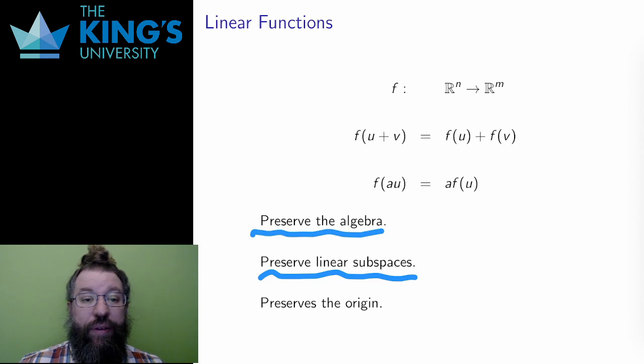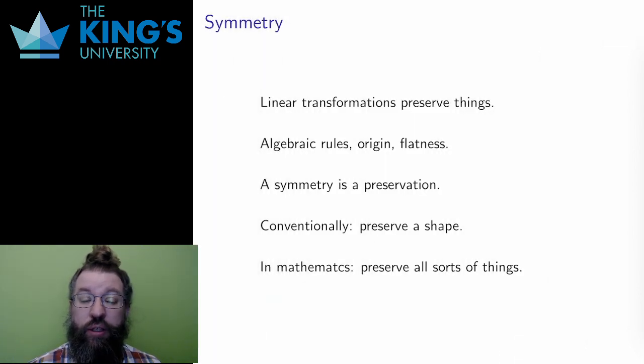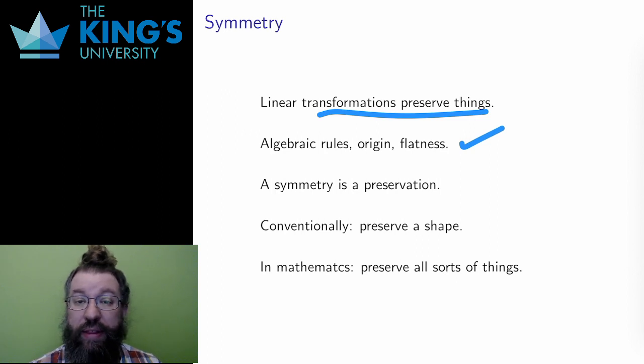Flat, infinitely extended things are sent to other flat, infinitely extended things. Finally, a linear transformation must also preserve the origin. The zero vector must always go to the zero vector. So, using this language, linear functions preserve things. They preserve algebraic rules, addition and scalar multiplication. They preserve linear subspaces, sending flat things to other flat things. They preserve the origin, sending the zero vector to the zero vector.